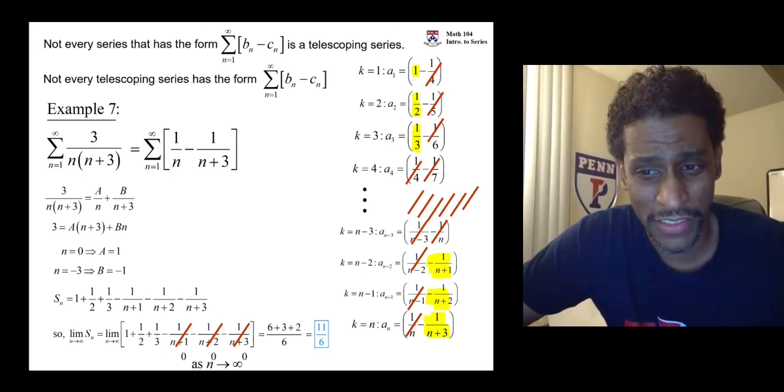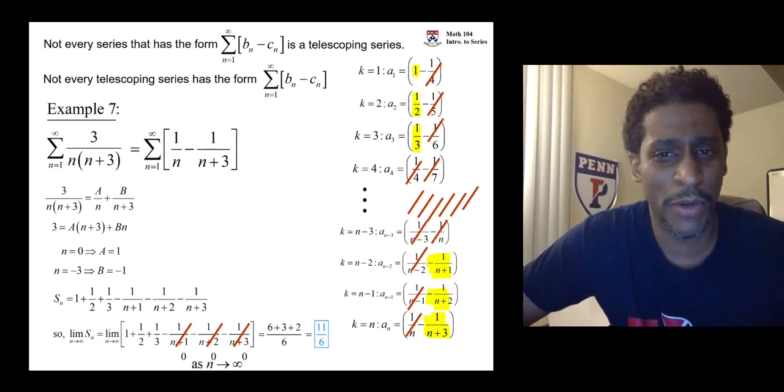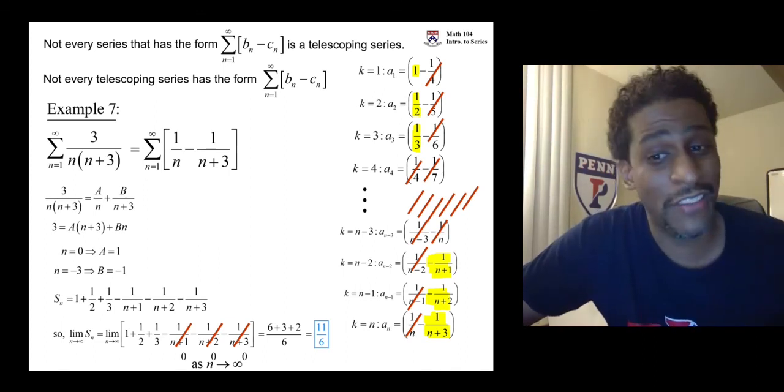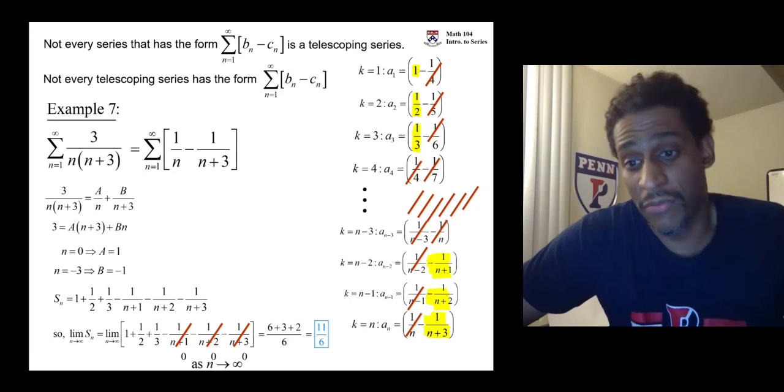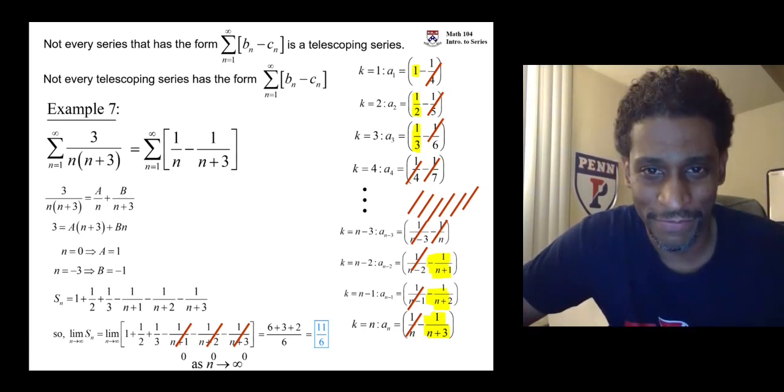You did it. Telescoping that wasn't in the right format to begin with. We had to partial fraction decompose and it took a while to cancel, but it converged because the terms at the end went to zero.